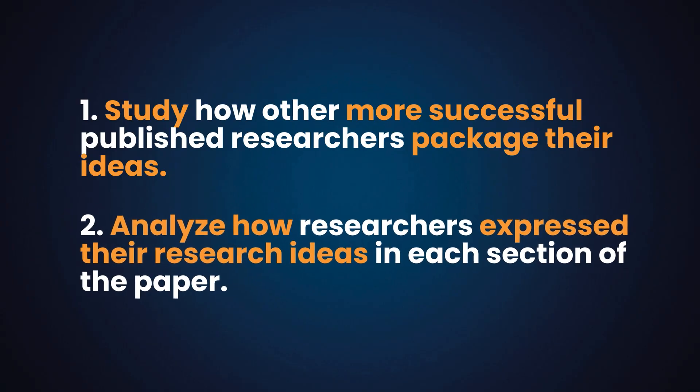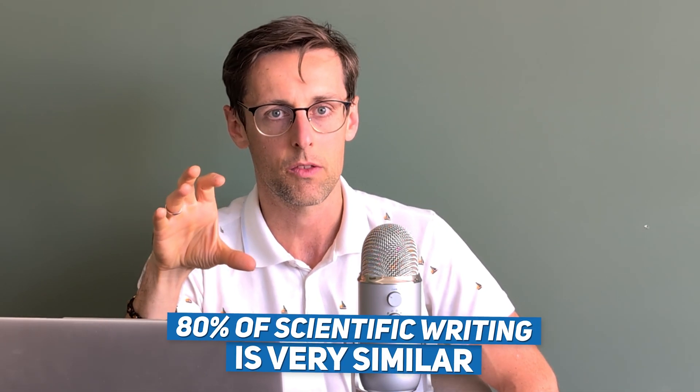The second aspect of the high-impact package is language. Once you have the structure, analyze how researchers do different things in the paper in terms of language. For example, if the first paragraph of the introduction expresses the importance of the topic, how do the researchers actually do it in practice? You can fill in that blueprint with useful phrases — three to five per element will be sufficient. Scientific writing is very formulaic; 80% of it is very similar across disciplines. There are proven ways published researchers highlight the gap, present methodology, discuss findings, and make suggestions for future research. So why reinvent the wheel trying to be different?